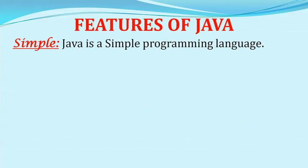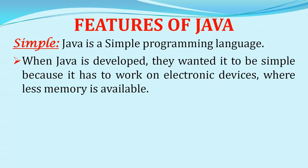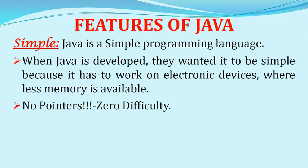The first feature is simple. Java is a simple programming language. Rather than saying that this is a feature of Java, we can say that this is the design goal of Java. When Java was developed, they wanted it to be simple because it has to work on electronic devices where less memory is available. The difficult concepts of C and C++ have been omitted in Java.